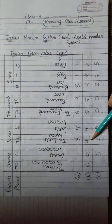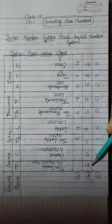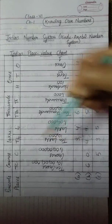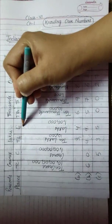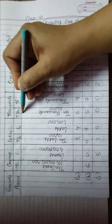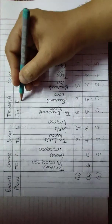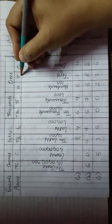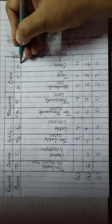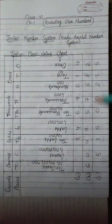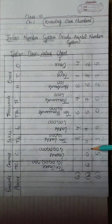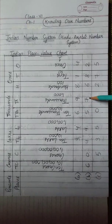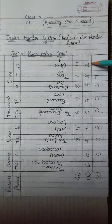See one more example. Here 6 is written in the ten crores column, 0 is written in the crores column, 4 is written in the ten lakhs column, 9 is written in the lakhs column, 5 is written in the ten thousands column, 7 is written in the thousands column, 6 is written in the hundreds column, 8 is written in the tens column and 2 is written in the ones column. So this whole number will be read as 60,49,57,682.